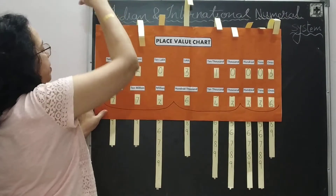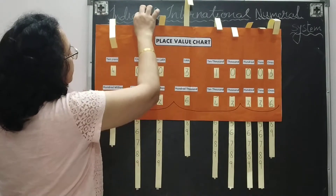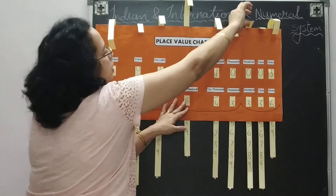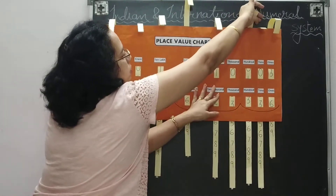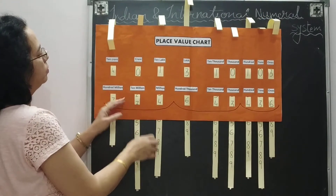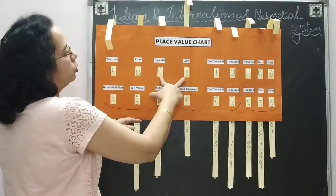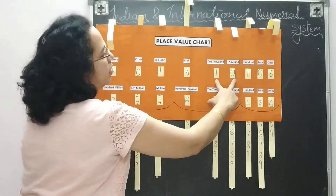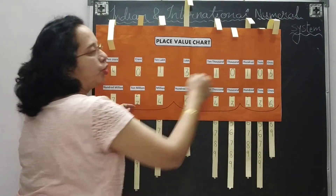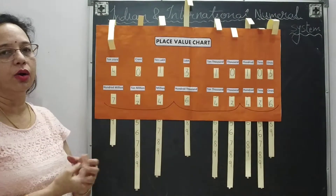Last example I am taking. How do we read this? Forty crore, thirteen lakh, ten thousand, one hundred and three — that is 40,13,10,103. So I think the Indian number system is now clear on how to read.